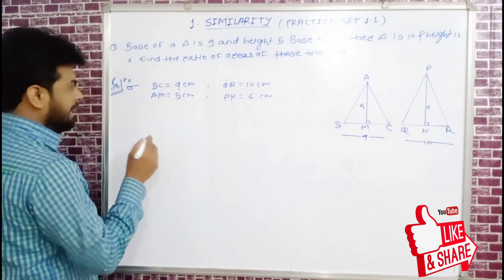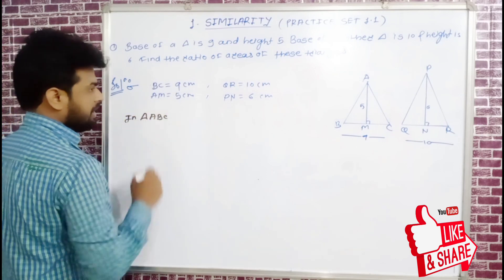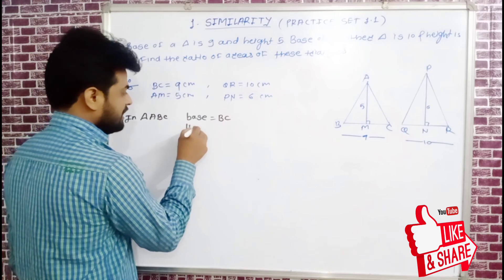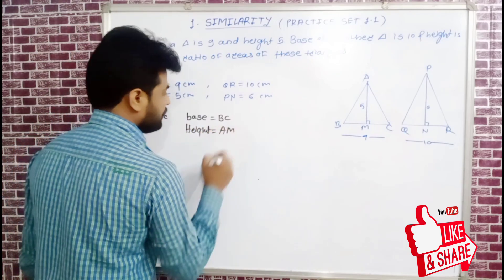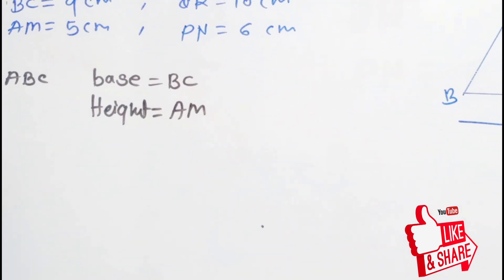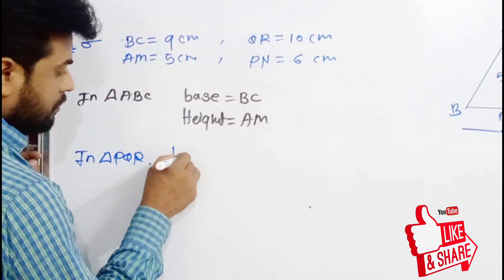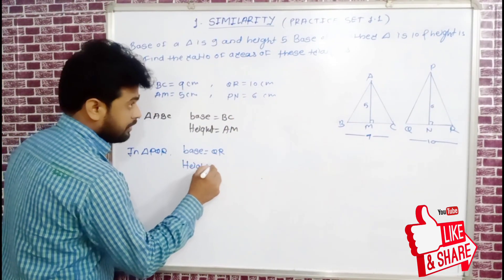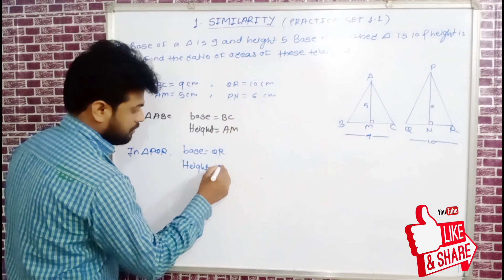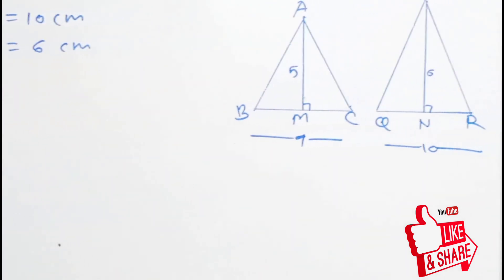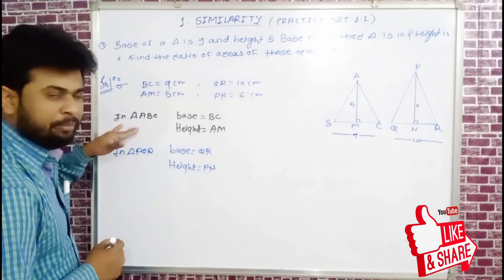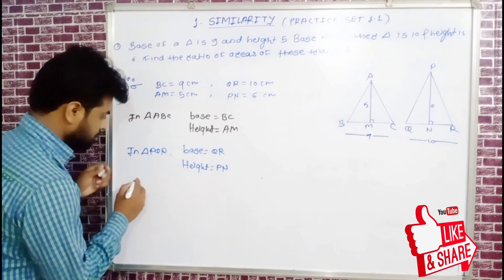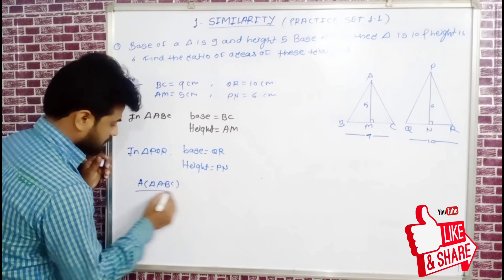In triangle ABC, the base and height are given. As it is, in triangle PQR, the base QR and height are also given. We will now find the ratio of the areas of the first and second triangles.